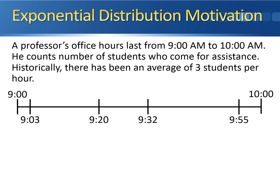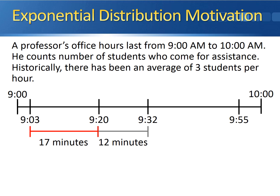For the Poisson distribution, this was all we were concerned about — the number of students who showed up in this period of time. With the exponential distribution, we're concerned about something else: the amount of time it takes between arrivals. We're looking at the 17-minute difference between 9:03 and 9:20, the 12-minute difference between 9:20 and 9:32, and the 23-minute difference between 9:32 and 9:55.